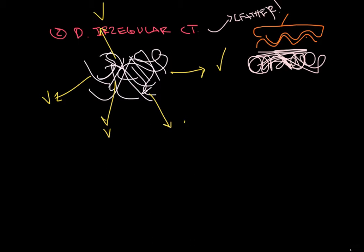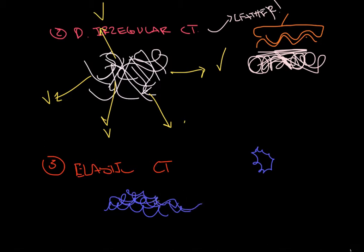And last but not least, I think I might have talked about it before, but elastic. I forgot about this one, actually. Elastic CT, so there's elastic, obviously tons of elastic fibers. They're parallel elastic and collagen fibers. If you can remember my example was the aorta.